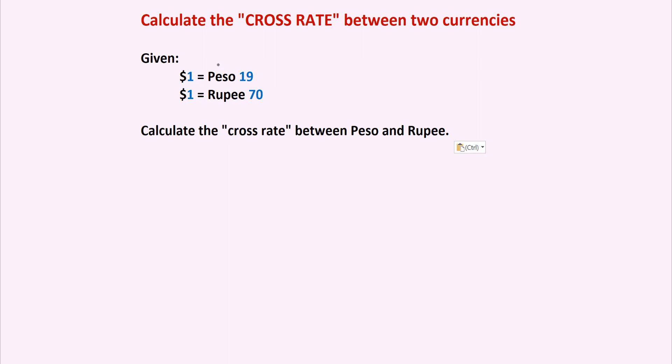So we have two exchange rates: one between the U.S. dollar and one country's currency, and then the second exchange rate is again between the U.S. dollar and another foreign country's currency. The question is: calculate the cross rate between the peso and the rupee. The cross rate is the implied exchange rate between two foreign currencies — none of them is the domestic currency, which is the U.S. dollar.